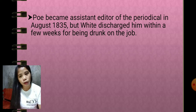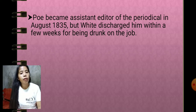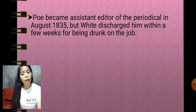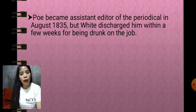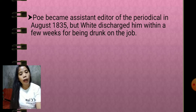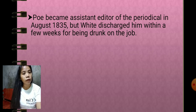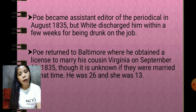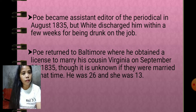Poe became assistant editor thanks to the connections of Thomas W. White and John P. Kennedy, but was discharged after only a few weeks due to being drunk. When Poe returned to Baltimore, he obtained a license to marry his cousin Virginia on September 22, 1835.